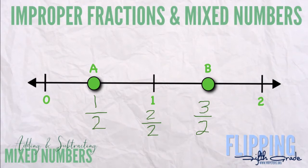3 over 2 can also be written as 1 and 1 half. We're going to get into that and how to do that in just a second. So we can see now that the middle of 0 and 1 is 1 half, and the middle of 1 and 2 is 1 and 1 half. Let's move on and see how we can convert back and forth.